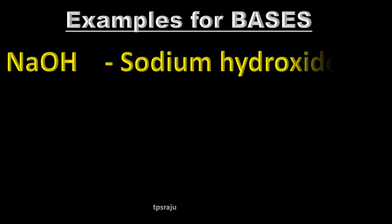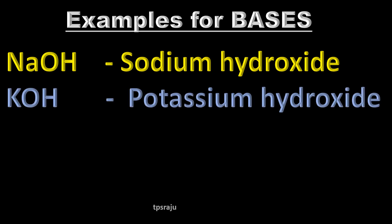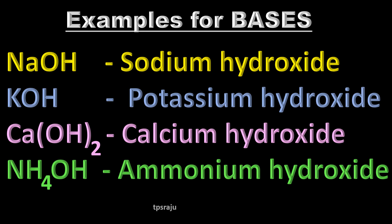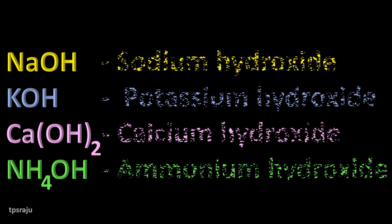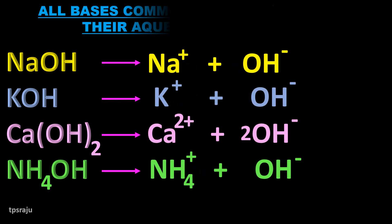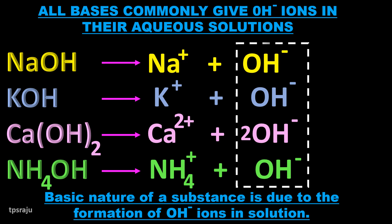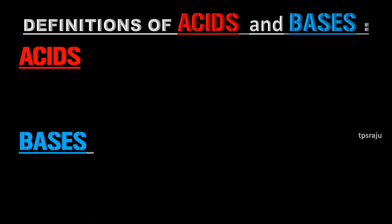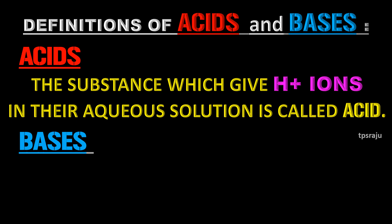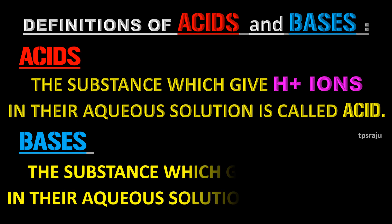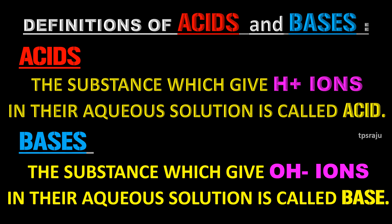Now, some examples for bases: sodium hydroxide, potassium hydroxide, calcium hydroxide, ammonium hydroxide, etc. All bases commonly give OH- ions in their aqueous solutions. These OH- ions are responsible for the basic nature of the bases. Hence, we define acids and bases as: the substance which gives H+ ions in its aqueous solution is called an acid; the substance which gives OH- ions in its aqueous solution is called a base.